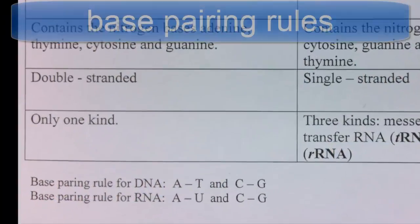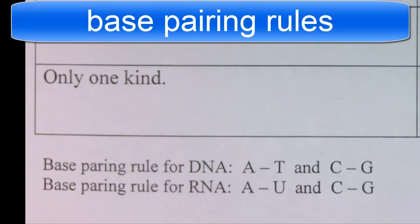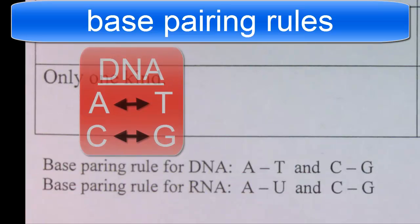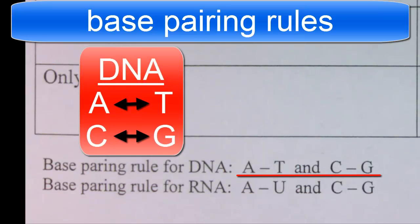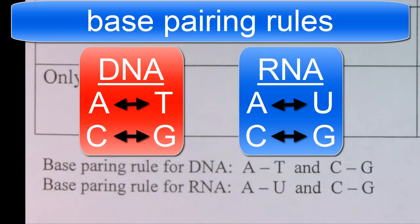The last thing to focus on are the base pairing rules with DNA and RNA. The base pairing rules for DNA are: adenine pairs with thymine and cytosine pairs with guanine. The base pairing rules for RNA are similar, except there's no thymine, so adenine pairs with uracil and cytosine pairs with guanine, and vice versa.